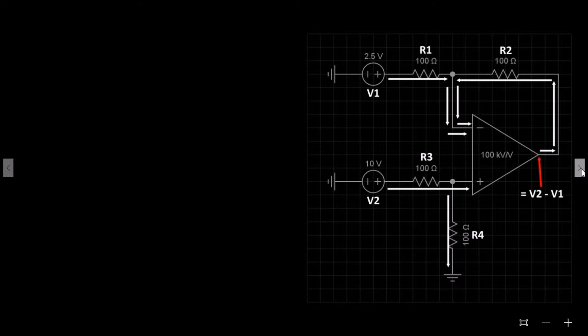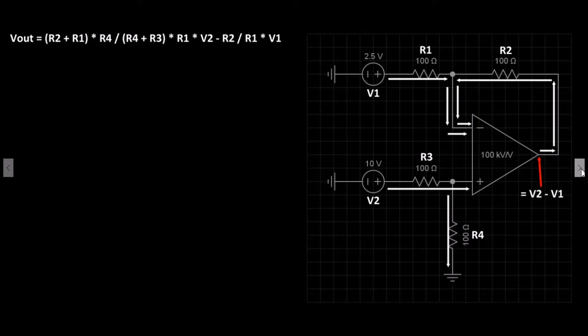Let's look at the formula used to calculate the output. Vout equals (R2 + R1) multiplied by R4 divided by (R4 + R3) multiplied by R1 multiplied by V2 minus R2 divided by R1 multiplied by V1. The formula is quite long but fairly simple, so we will break it down into sections so it will be much clearer.